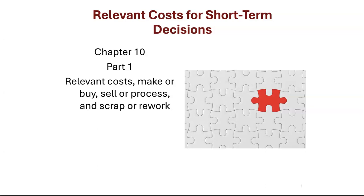Hello again. This is Chapter 10, Part 1, and what we're going to do is go over relevant costs, make or buy, sell or process, and scrap or rework. These are tools that help you, if you have a business, make these kinds of decisions easily.